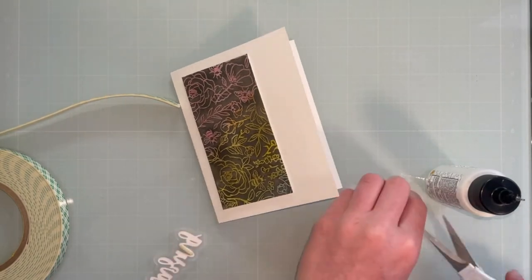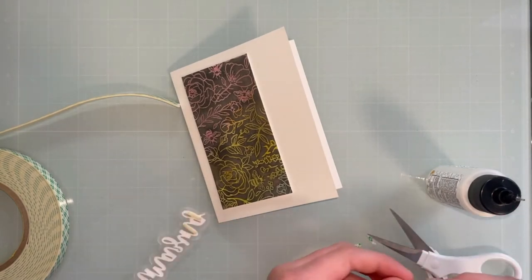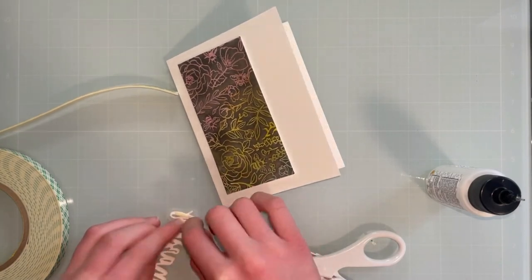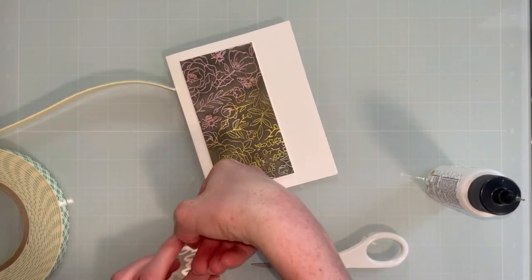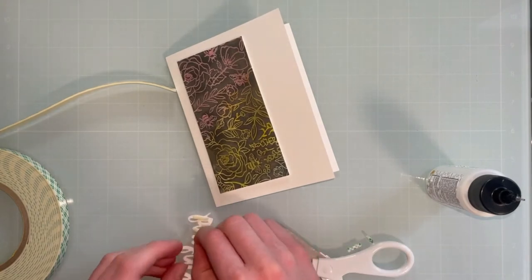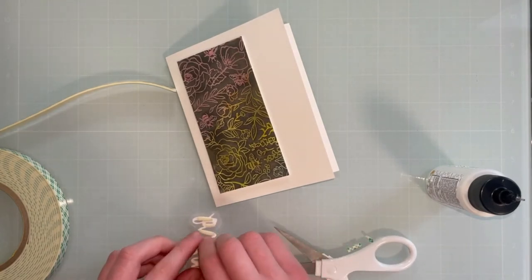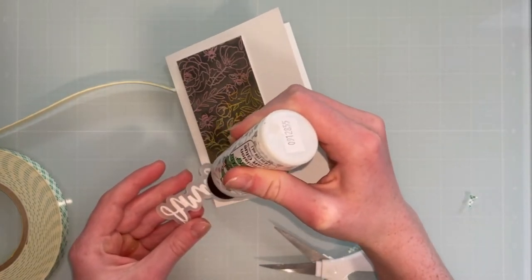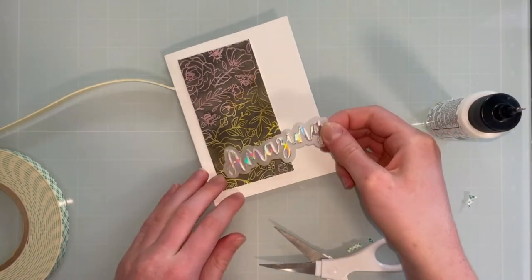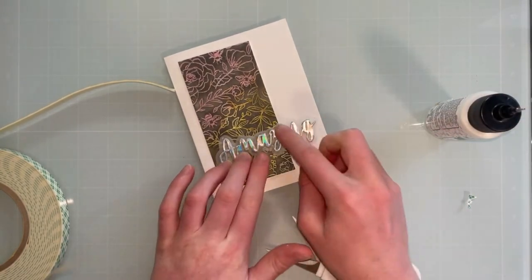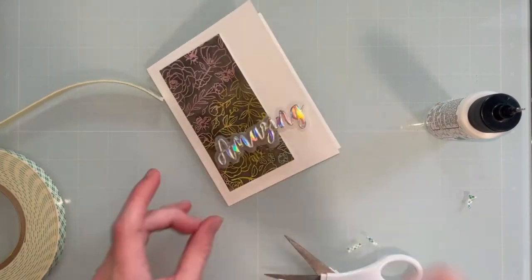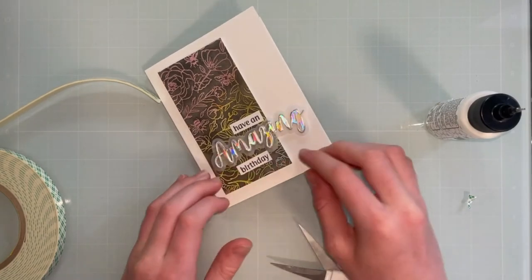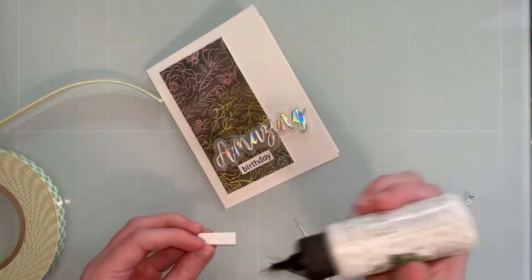And then I will just use liquid glue for the other part there. So I just had to cut little strips so that it would fit behind the words or the letters. Once I have that, I will add the liquid glue. And I'm going to place this one near the bottom of the card. And then I will again add a little sentiment there. This one I did it in white just so that it would stand out from the background a little bit.